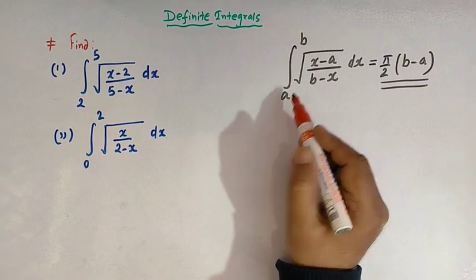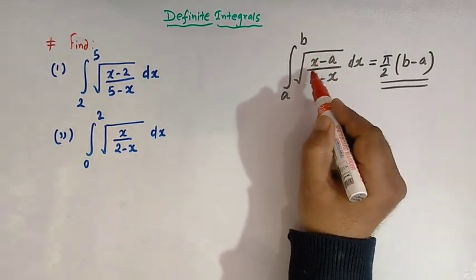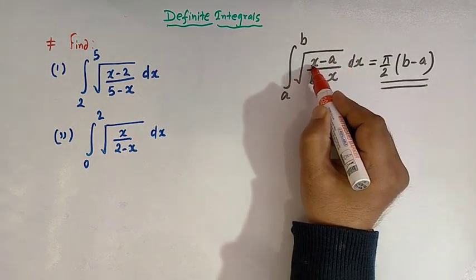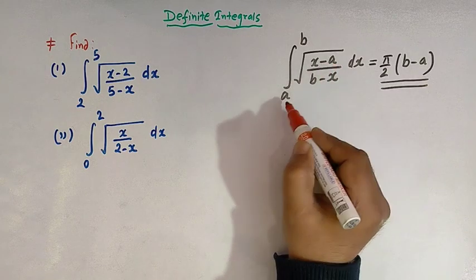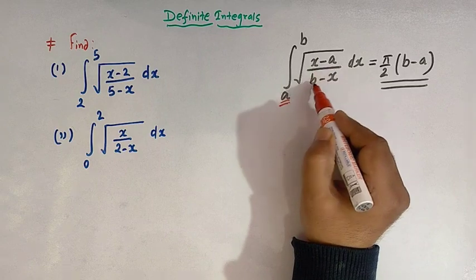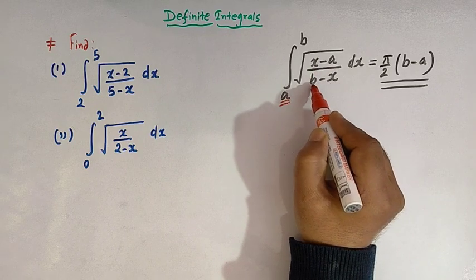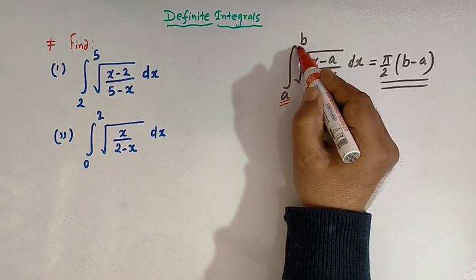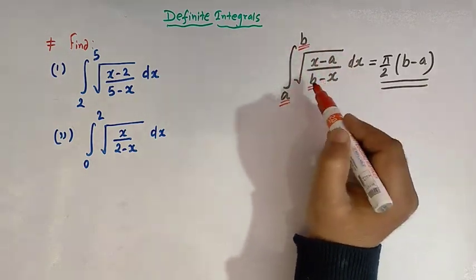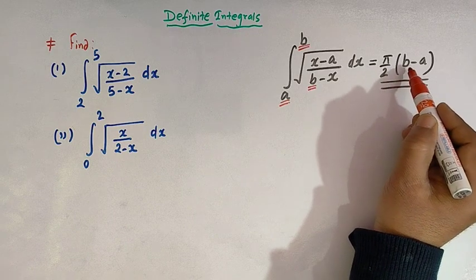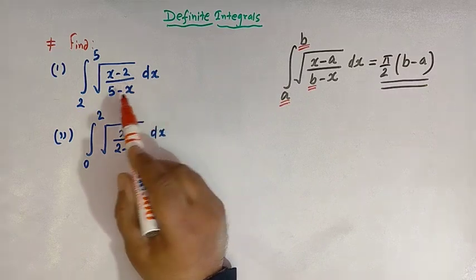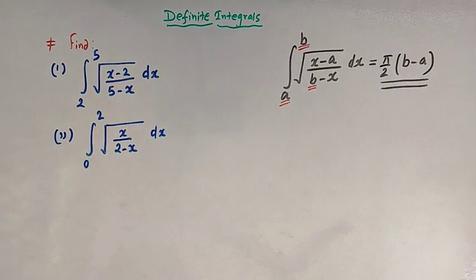So here if we see, we have the square root of (x − a) over (b − x). In the numerator we have x − a, where a is our lower limit, and in the denominator we have the factor (b − x), where b is our upper limit. So the value of this integral is π/2 times the difference of b and a. Using this result we can find out the values of these two integrals.